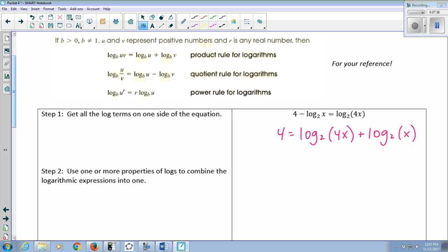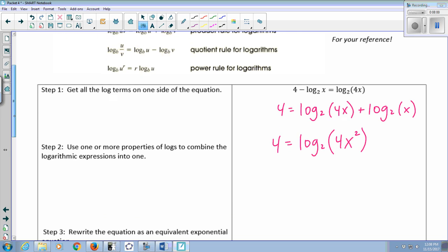Use one or more of your properties to combine the logs into a single expression. So this is 4 equals log base 2. Because those logs are combined via addition, I can compress them into a single log via multiplication. 4x times x is 4x squared. Now convert this to an exponential equation and solve.